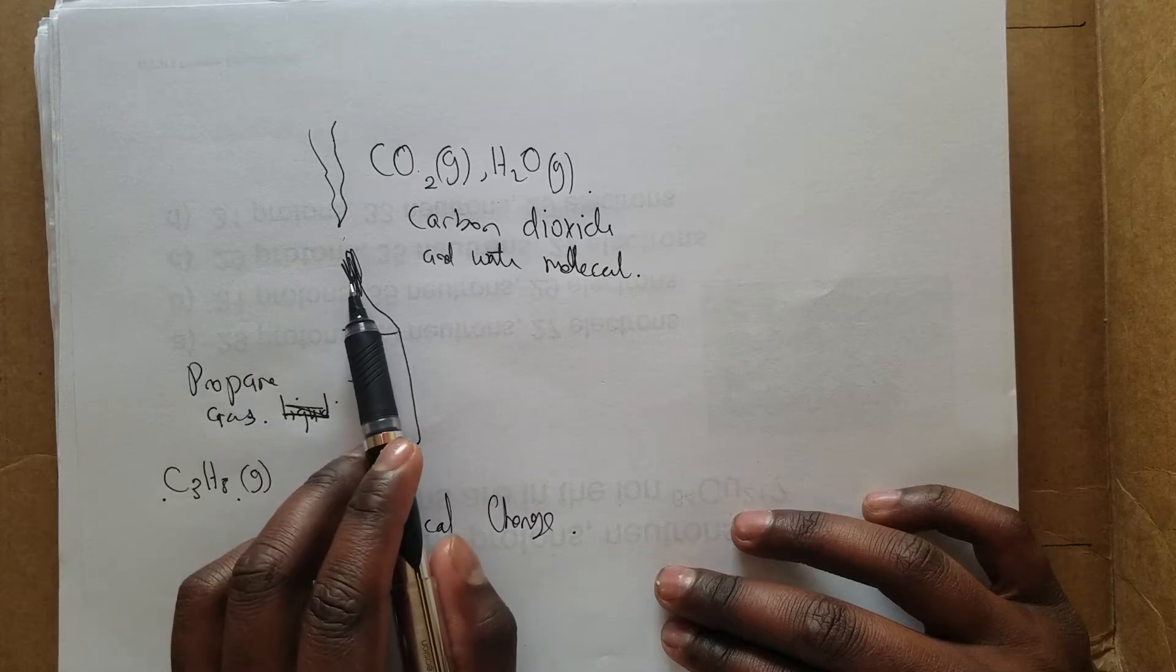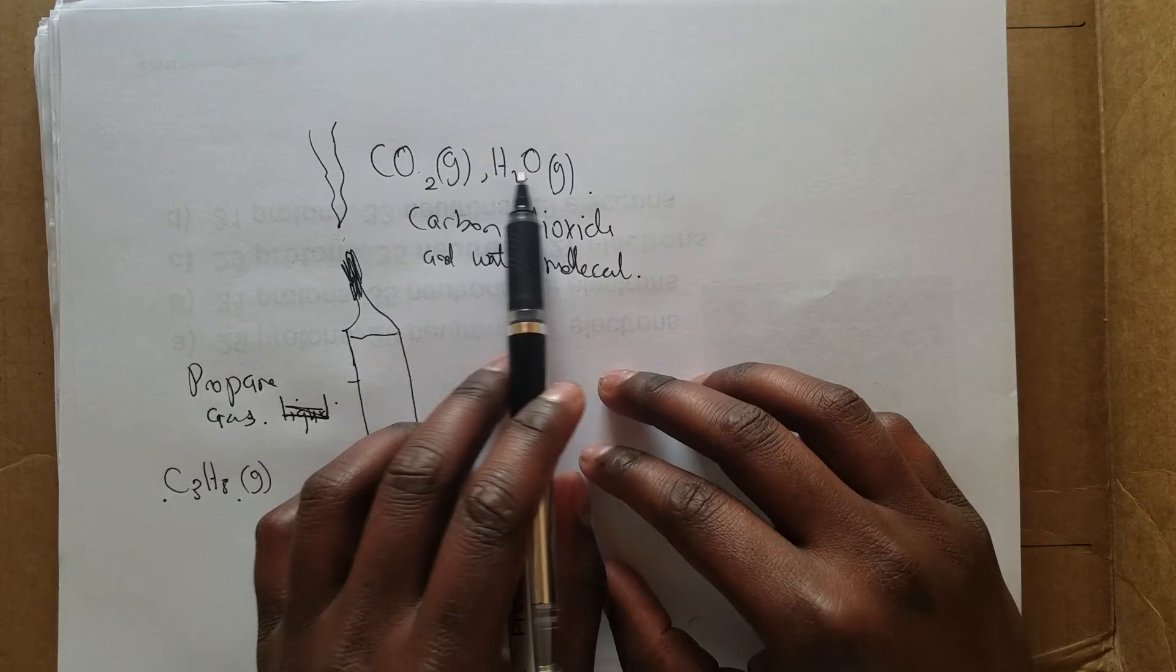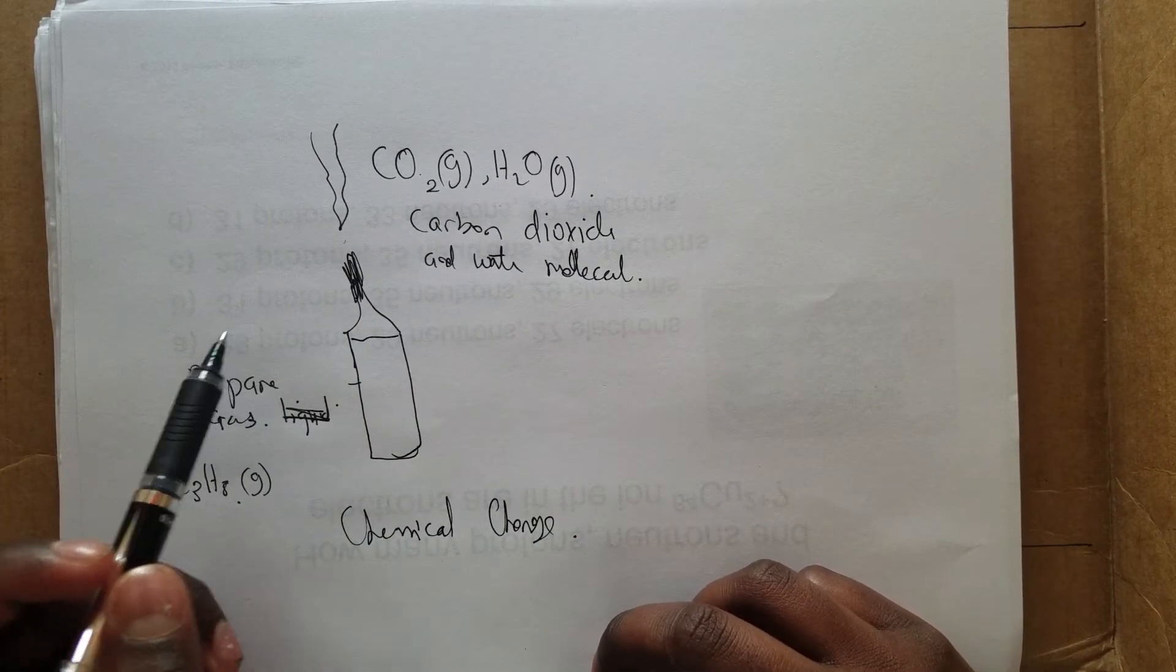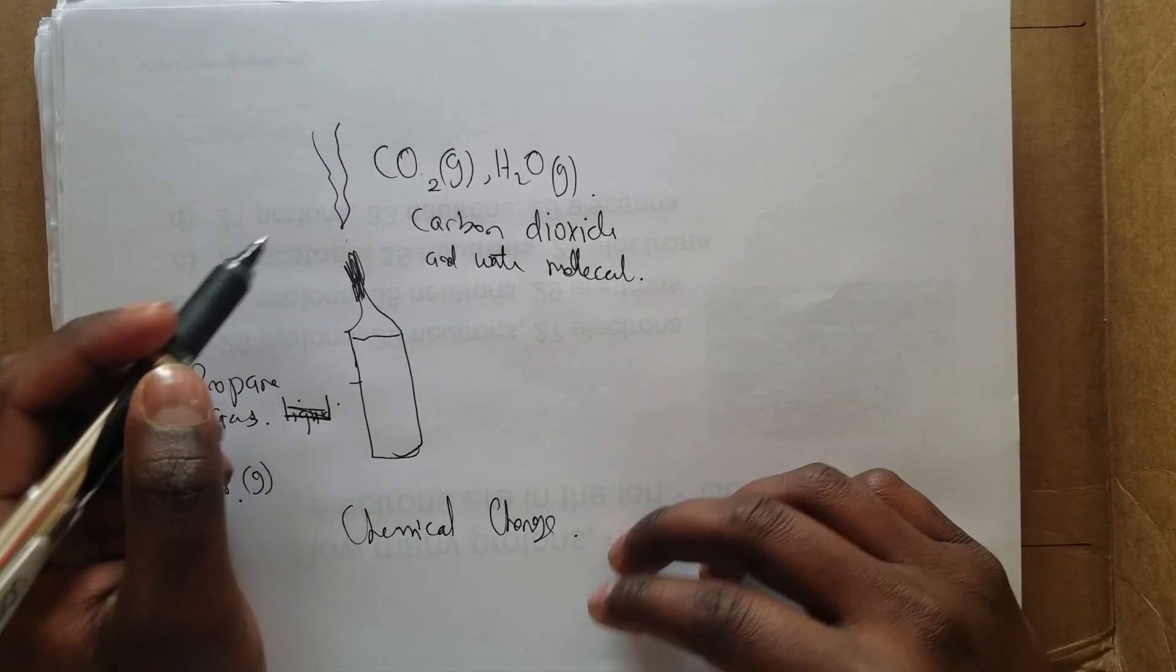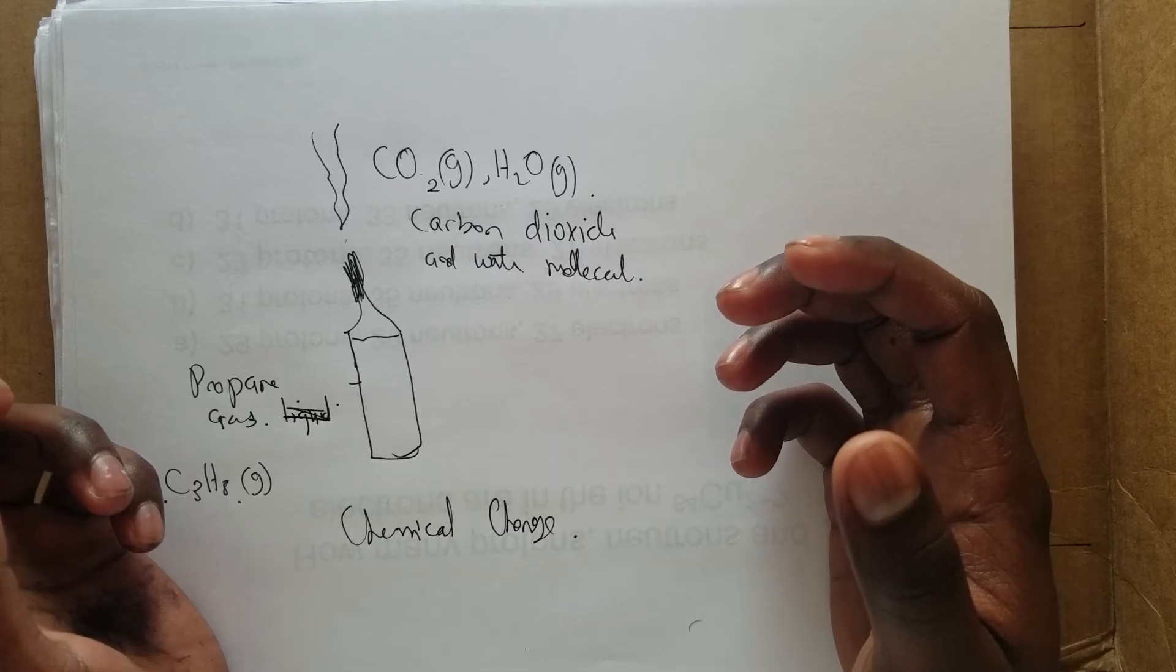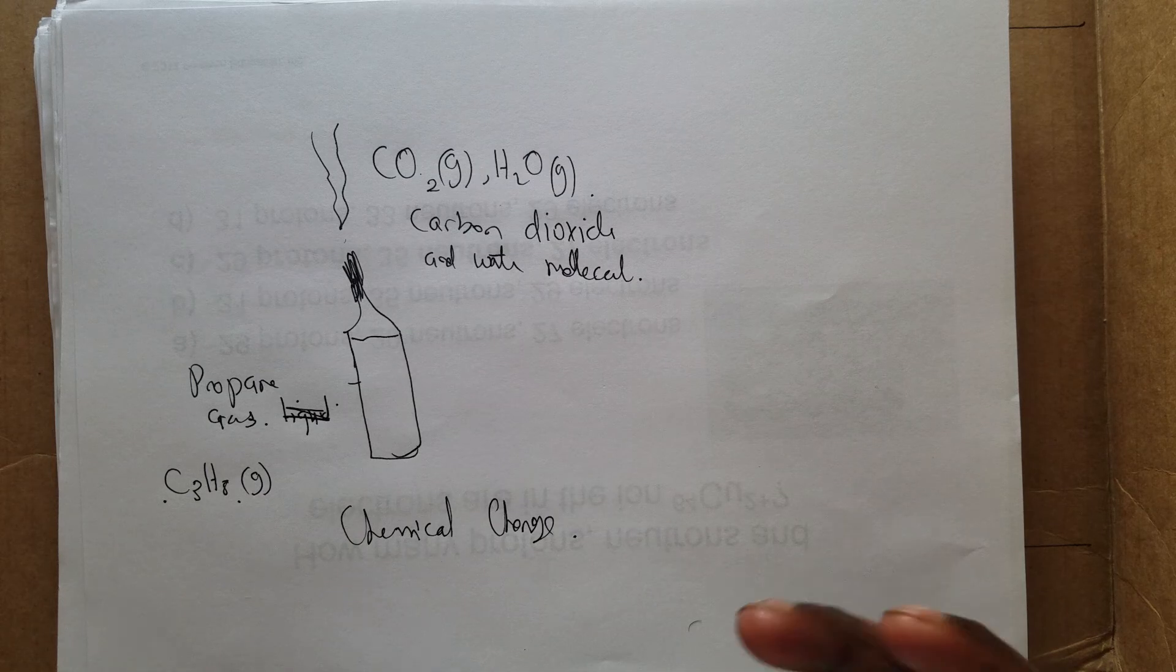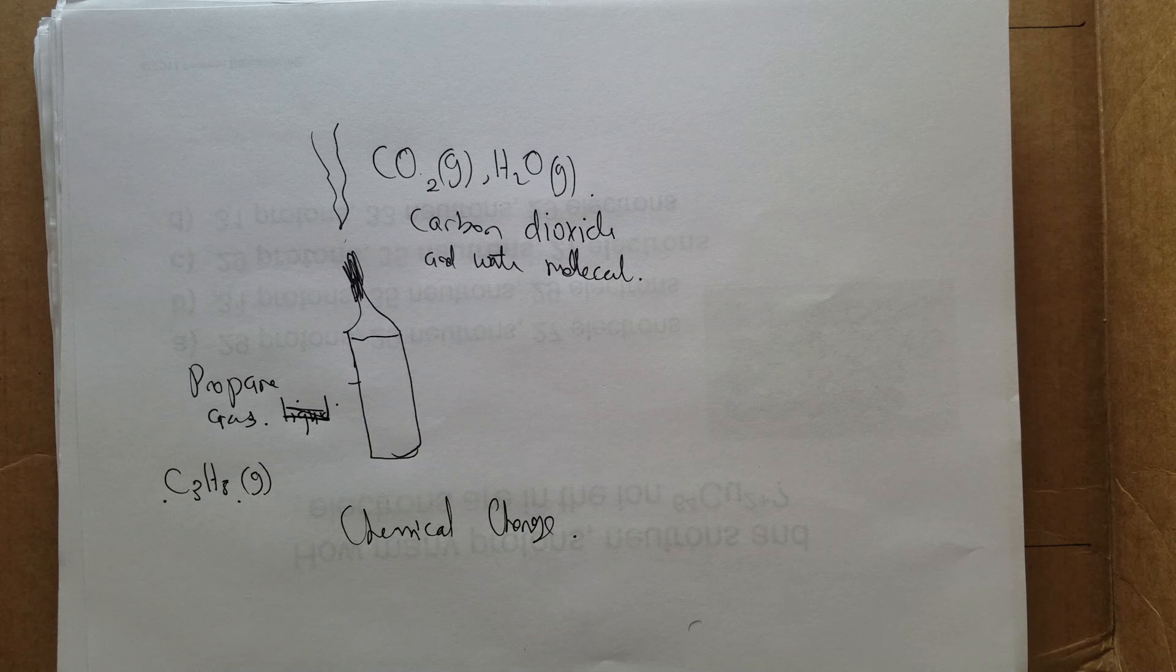When you burn something, most of the time you get a different substance. That's why most substances are created chemically by heating. For example, when stars explode, the intense heat causes new substances to form—substances we have here on Earth, like gold atoms. All these things are formed by stars.